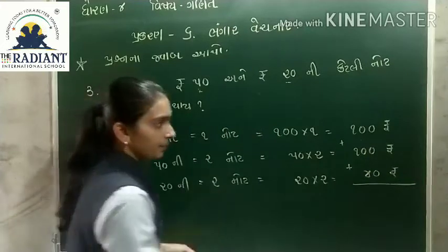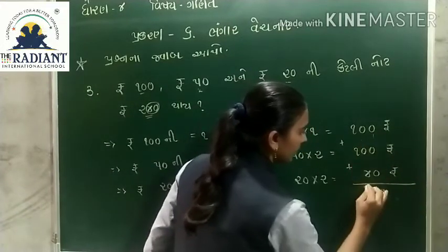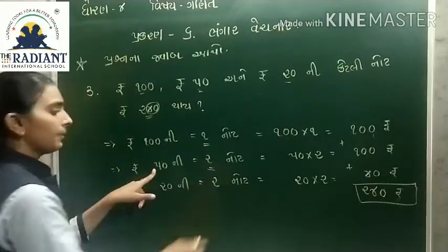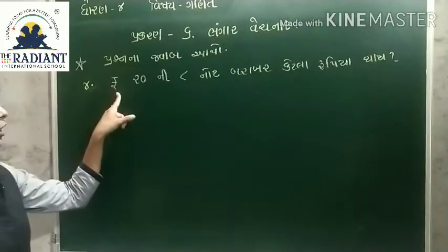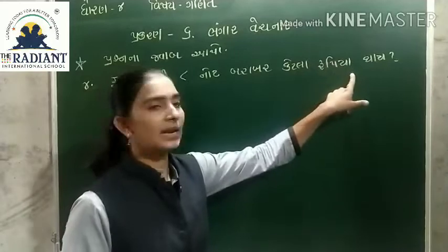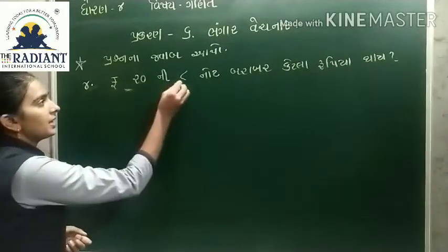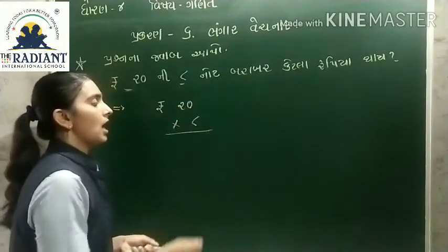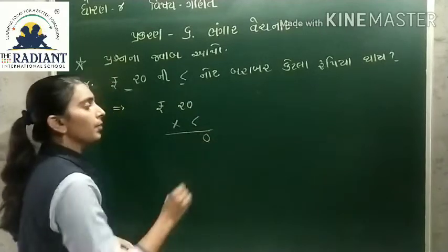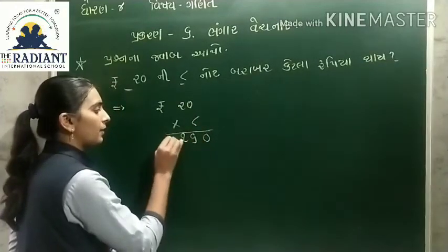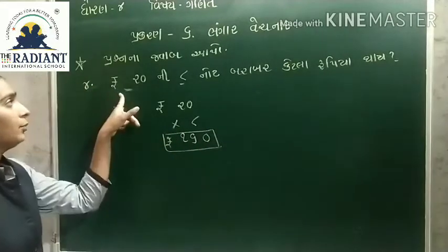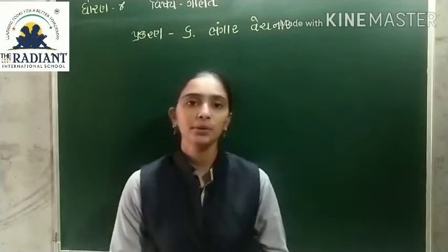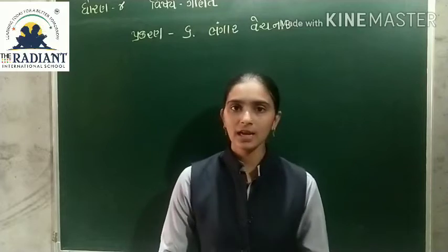આ સરવારો: 0 + 4 + 2 = 6, 2 — 240 રૂ. ઉત્તર: 50 ની 2 નોટ અને 20 ની 2 નોટ. 20 × 2 = 40, 50 × 2 = 100 — 100 + 40 = 140? — 20 × 3 = 60, 20 × 4 = 80, 20 × 5 = 100 — 240 = 50 × 2 + 20 × 7. 106 ÷ 20 = ?